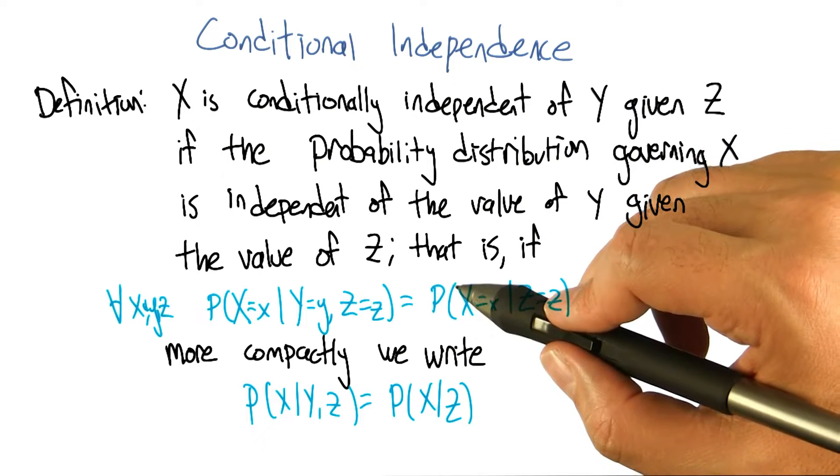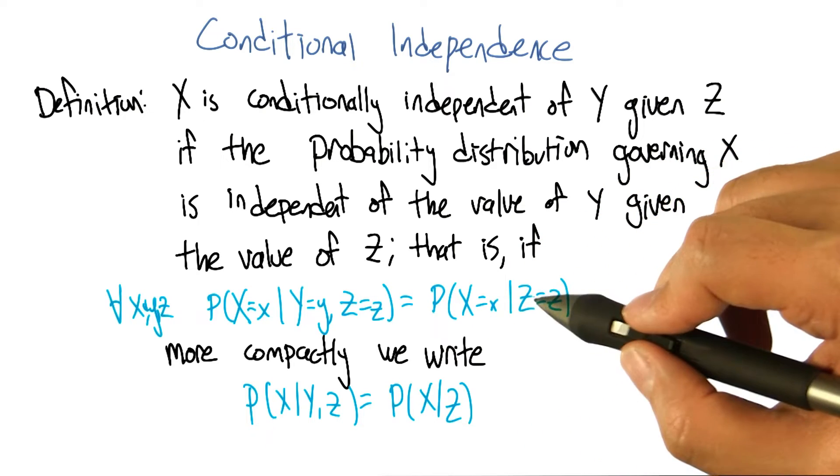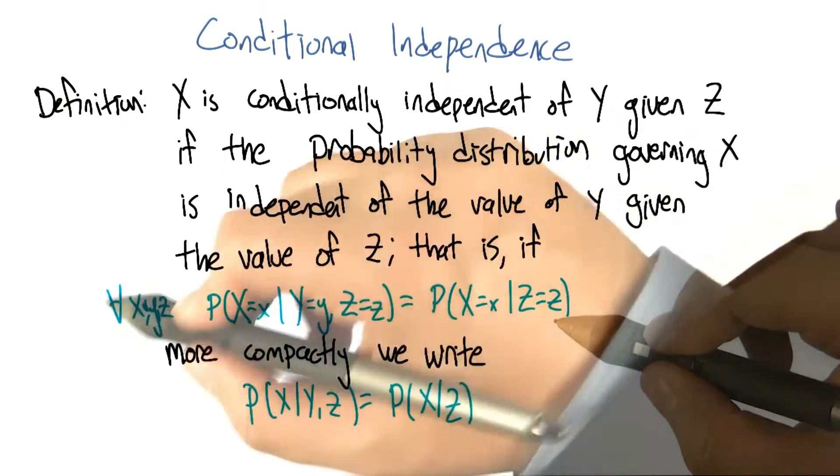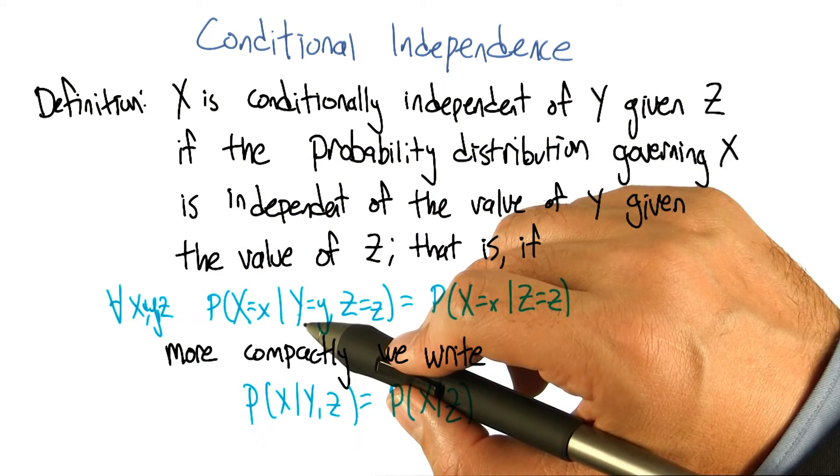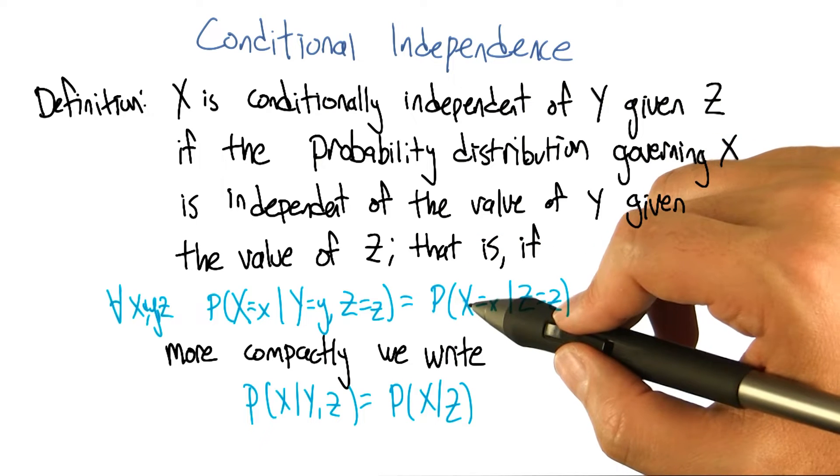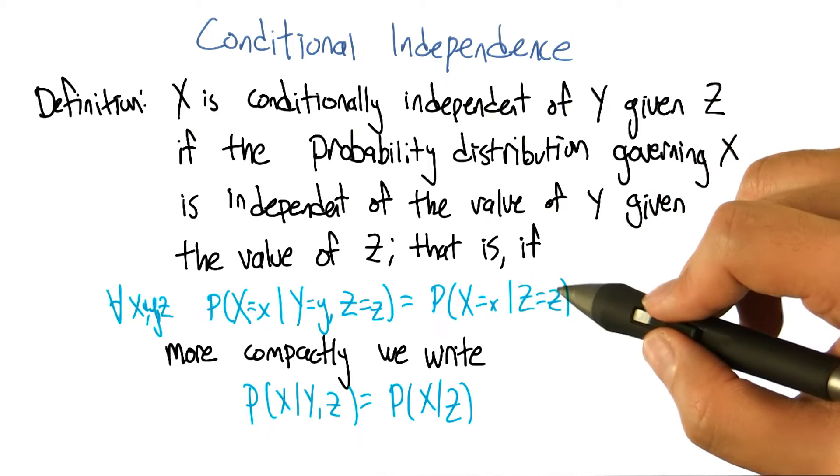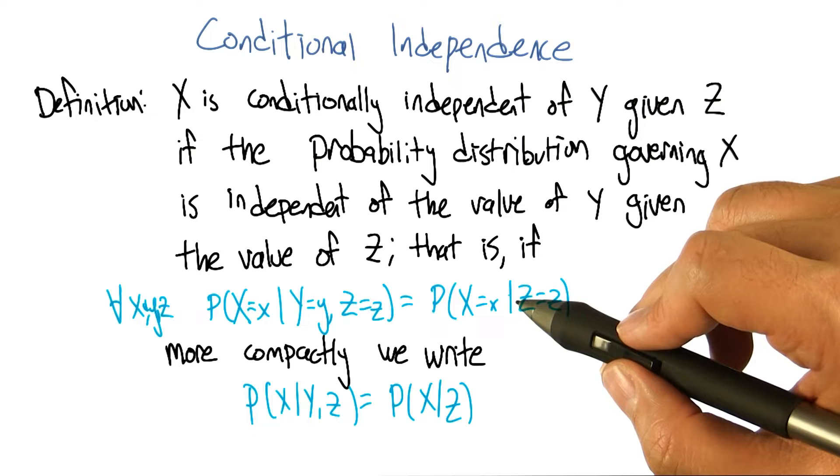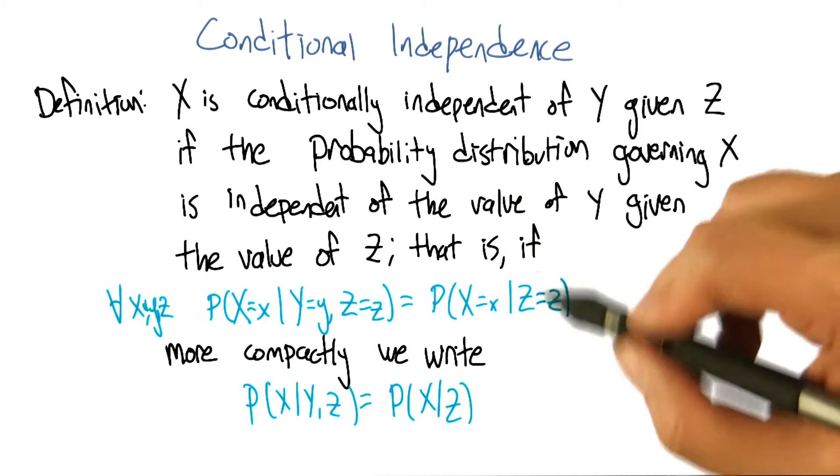Equals the probability that big X takes on the value of x, given big Z takes on the value of z. If those are equal for all possible ways of filling in the values of the variables, then we say that X is conditionally independent of Y given Z, right?